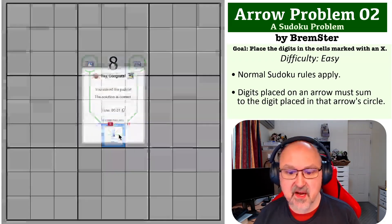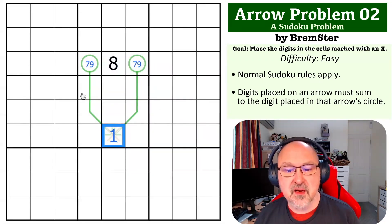This cell right here has to be a 1. If I was to put a 2 in here, then I would be at 15 plus 2, which is 17, and I can't put 17 into these cells.